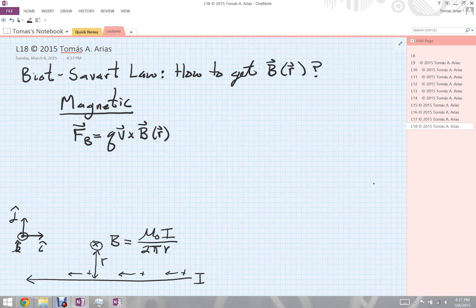The topic of this video is the Biot-Savart law, which basically answers the question: how do we get the magnetic field at any location in space?